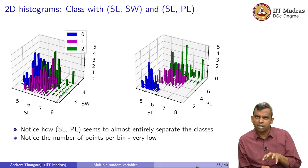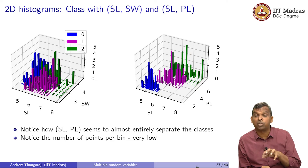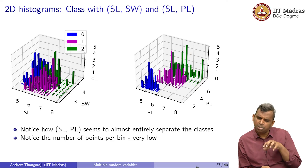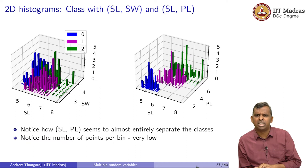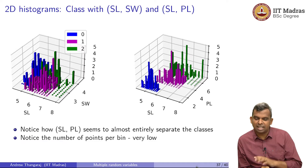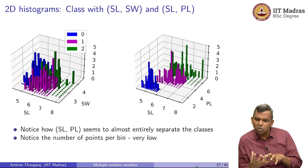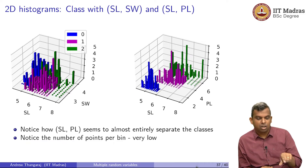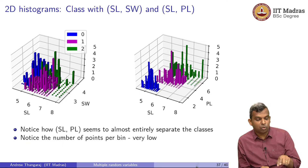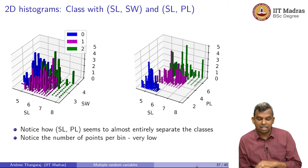Maybe you want to think of them as continuous random variables. For every class you have a different pair of continuous random variables which are jointly distributed, and maybe you can think of them as some sort of distribution. Interestingly, the pair SL and PL seems to separate out the classes — the classes do not seem to overlap too much, there is a little bit of overlap but not too much. On SL and SW you see a lot of overlap between the classes, whereas here there is not too much overlap.